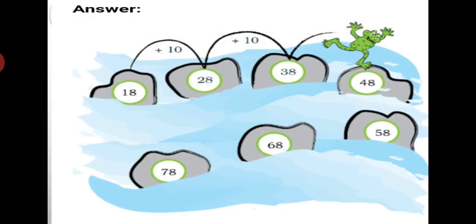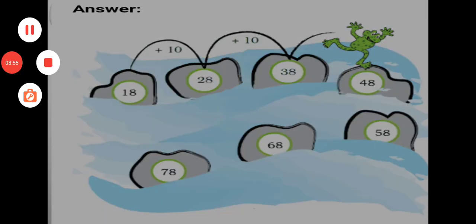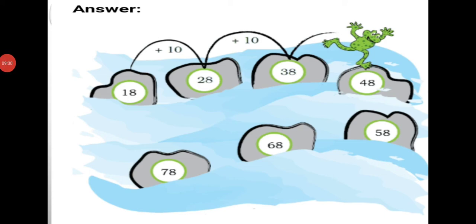You can see the answer: from eighteen to twenty-eight, twenty-eight to thirty-eight, thirty-eight to forty-eight, forty-eight to fifty-eight, fifty-eight to sixty-eight, and sixty-eight to seventy-eight. These three or four questions you have to do in your book, and the number pattern on page number 35 you have to do in your notebook. Page number 34 we have not completed. This I will tell you in the next module.